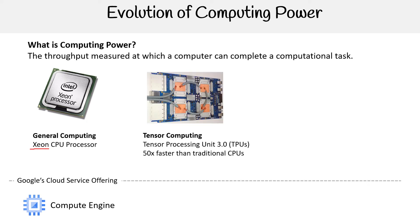Then we're looking at tensor computing. Google created their own machine learning and deep learning framework called TensorFlow, and it has a new type of data structure called a tensor that is specifically optimized for neural networks. Google decided to create a piece of hardware specifically designed for their tensor data structure, which is the TPU. For this particular use case, it is 50 times faster than a traditional CPU.